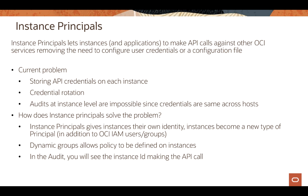Membership in a dynamic group is determined by a set of criteria called matching rules. When you set up a dynamic group, you define these rules, and instances that match the rule become members. As more resources are launched, they are also matched against the dynamic group — that's why they're called dynamic, because membership can change over time. Authentication is at the instance level, and authorization is done via membership in the dynamic group.